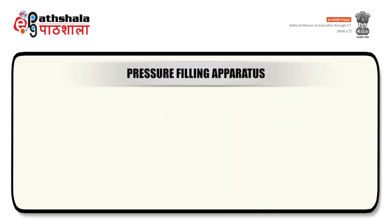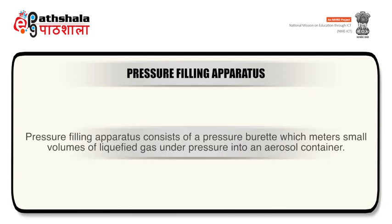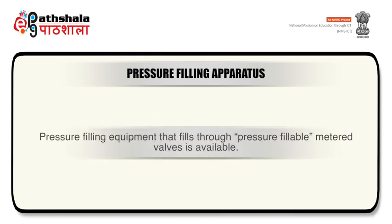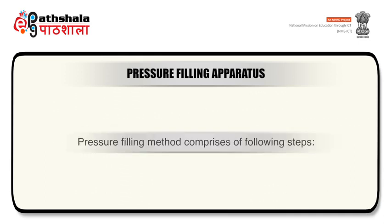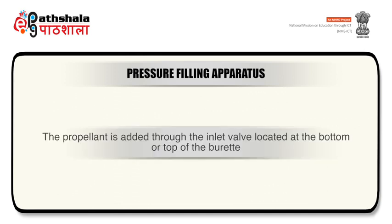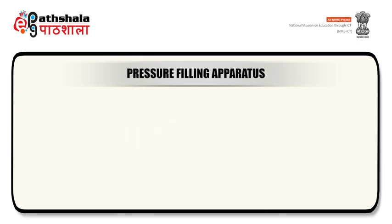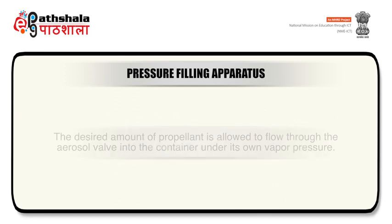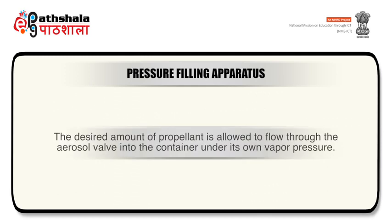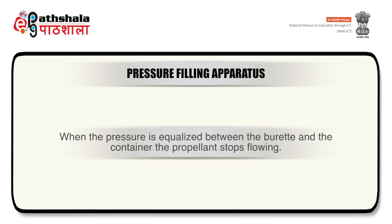Pressure filling apparatus comprises of a pressure burette which meters small volumes of liquefied gas under pressure into an aerosol container. Pressure filling equipment that fills through pressure fillable metered valves is available. Pressure filling method comprises various steps involving the addition of the propellant through the inlet valve located at the bottom or top of the burette. Trapped air is allowed to escape through the upper valve, and the desired amount of propellant is allowed to flow through the aerosol valve into the container under its own vapor pressure. When the pressure is equalized between the burette and the container, the propellant stops flowing.